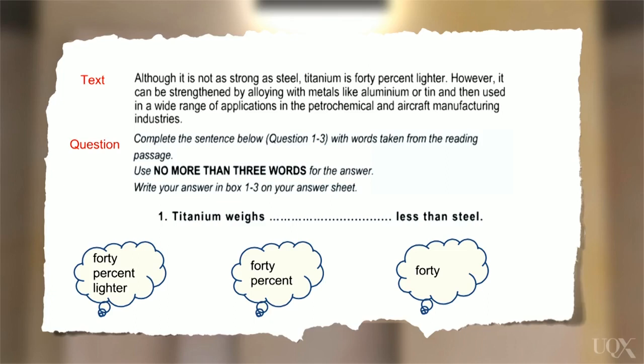Okay, so let's read out the second one. Titanium weighs 40% less than steel. Does that make sense? Yes. It's a paraphrase of what it says in the text. Does it fit grammatically? Yes. Are there any words being repeated? No, it's fine.